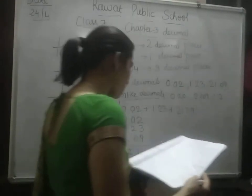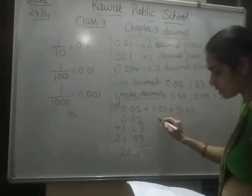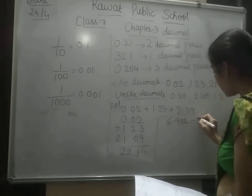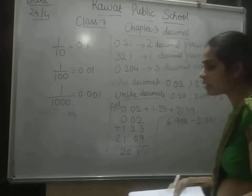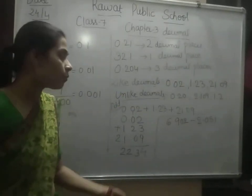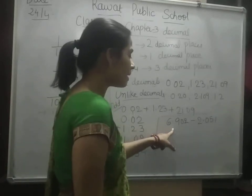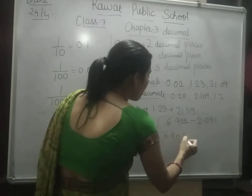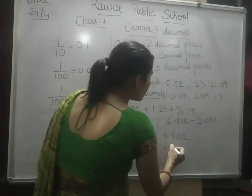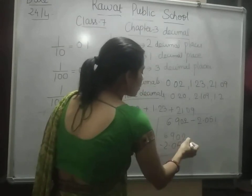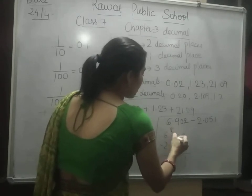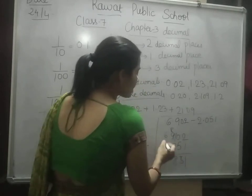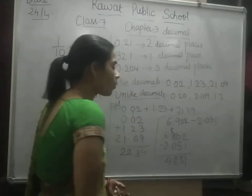In the same way we can subtract also. If we are asked to subtract 6.902 minus 2.051, we have to put the values in such order that the decimal point comes under the decimal point. So 6.902 minus 2.051: 2 minus 1 is 1, 0 minus 5 — borrow, 10 minus 5 is 5, 8 minus 0 is 8, and 6 minus 2 is 4. So the answer is 4.851.